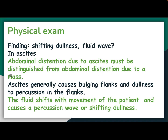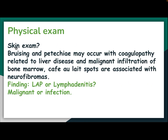Shifting dullness and a fluid wave indicate ascites. Abdominal distention due to ascites must be distinguished from distention due to a mass. Ascites generally causes bulging flanks and dullness to percussion in the flanks; fluid shifts with movement of the patient and produces a percussion wave or shifting dullness. On skin exam, bruising and petechiae may occur with coagulopathy related to liver disease or malignant infiltration of the bone marrow.